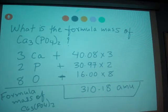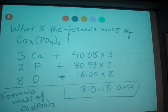So you can find atomic mass of each element multiplied by how many atoms, and then you can add them together to find formula mass of Ca3(PO4)2. Now remember,